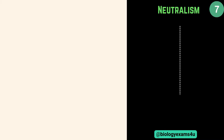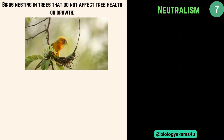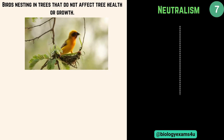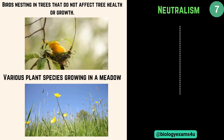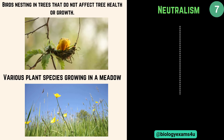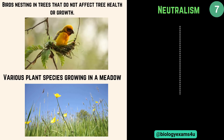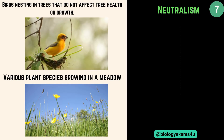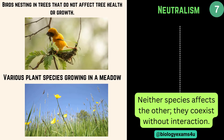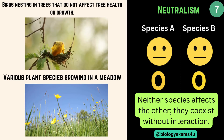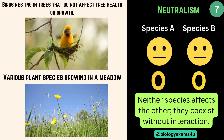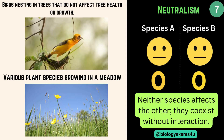The next interaction is called neutralism. Birds nesting in trees do not affect tree health or growth. Various plant species growing in a meadow without influencing each other, or frogs and rabbits living in the same habitat with little interaction — these are all examples of neutralism. Neither species affects the other; they coexist without interaction. So species A is not affected — zero — and species B is also not affected — zero.